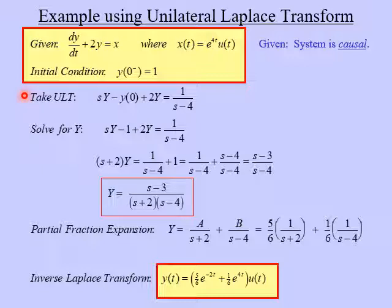So we'll start by taking the ULT of this differential equation. So we have the first derivative of y. That gives us sy. But remember now, for the ULT, we have minus the initial condition, minus y naught. And by the way, that is going to be equal to one. So we'll put that in on the next step.